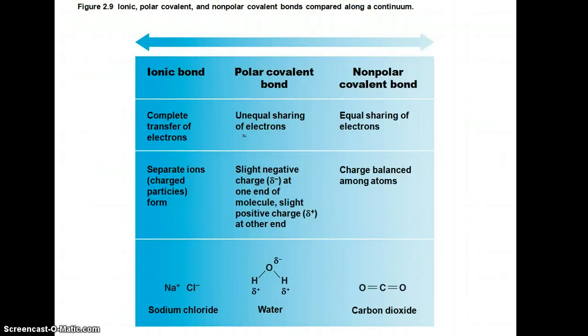So this kind of sums up the different kinds of bonds. Ionic bonds, you have complete transfer of electrons, and you have separate ions: cations, anions. Sodium chloride's an example. Polar covalent bond, unequal sharing of electrons. So your molecule will have one side that's slightly negative, one side that's slightly positive, such as water. And then your nonpolar covalent bonds, you have equal sharing of electrons, the charge is balanced among the atoms, and an example would be carbon dioxide.